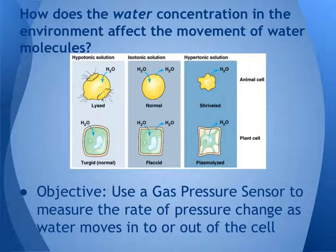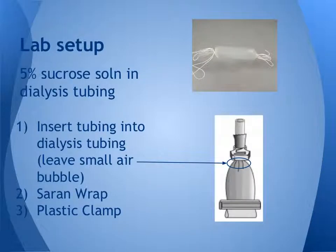In this lab, using the gas pressure sensor, we want to measure the rate of pressure change as the water moves into or out of our model cell. The actual setup for the lab is really important. We made a cell model using dialysis tubing, which is a semipermeable membrane. It's not a biological membrane — it's not alive — but it does have pores of a certain size.